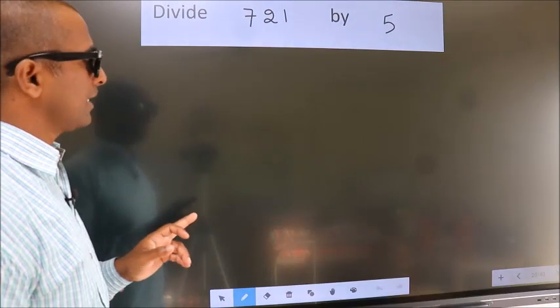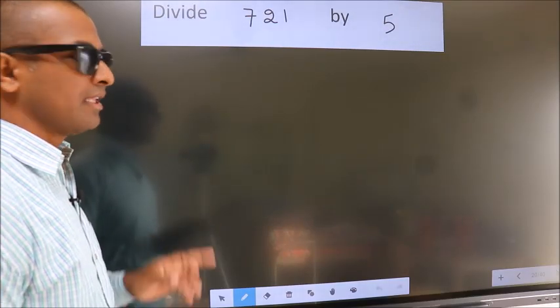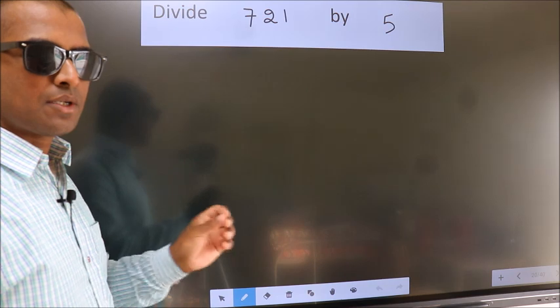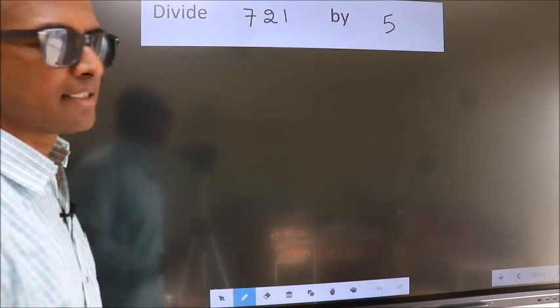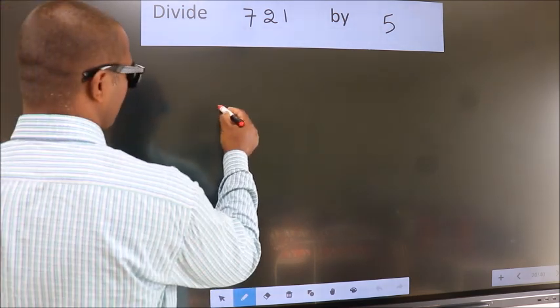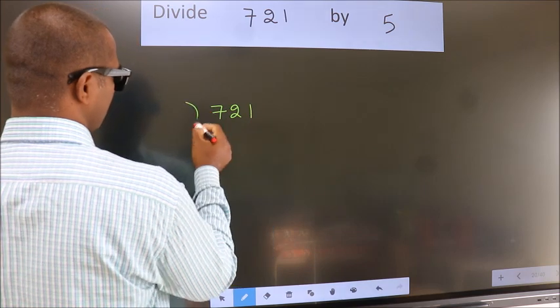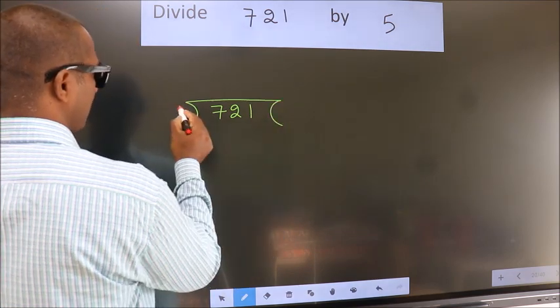Divide 721 by 5. To do this division, we should frame it in this way: 721 here, 5 here.